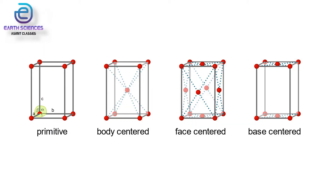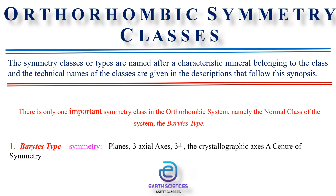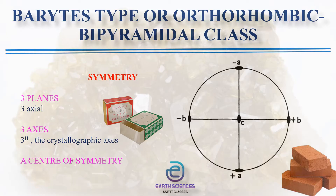The orthorhombic crystal system contains all basic Bravais lattices — primitive, body-centered, face-centered, and base-centered. The symmetry class is named after the characteristic mineral belonging to that class. In the orthorhombic crystal system, there is one important symmetry class — the barite class — which includes three planes of symmetry (all axial plane symmetry), three axes of symmetry of twofold symmetry, and a center of symmetry. Since all edges and faces repeat along a center, the barite type class is also known as the orthorhombic bipyramidal class.